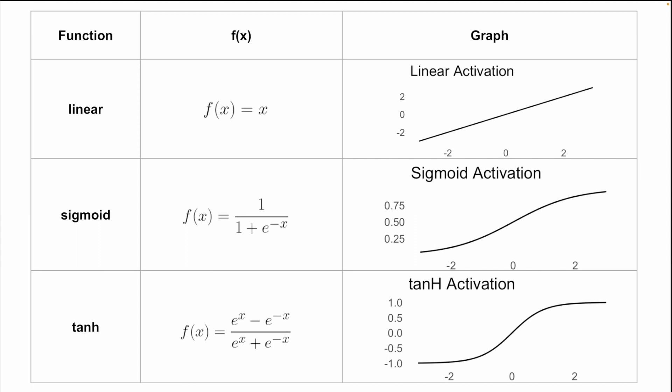Next, we have a sigmoid activation. Sigmoid activations are very useful because they take values, and no matter what those input values are, they squish the output to be between zero and one.